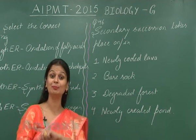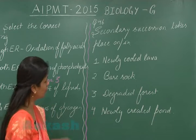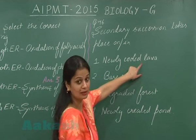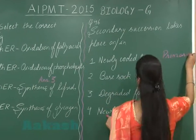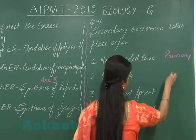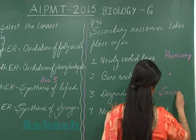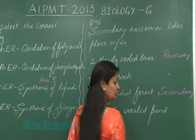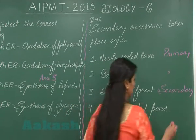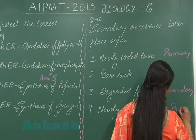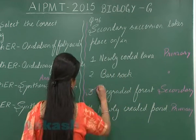Secondary succession occurs on an area which became bare due to the destruction of a community. Looking at the options: newly cooled lava — primary succession; bare rock — primary succession; degraded forest — secondary succession; newly created pond — no community present, so again primary succession. The right option is option number 3.